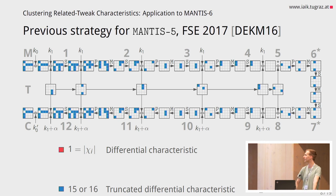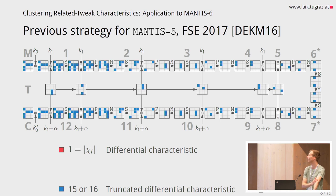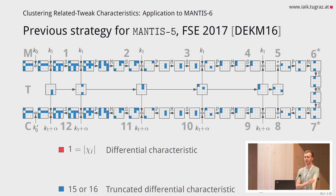If we go in the other direction and allow every possible tweak difference, we arrive at a truncated differential characteristic where we only care about whether the state cell is active or not — whether there is a difference or both cells are the same in each message. This means the S-box transition works with probability 1, but we have other constraints in the mixed column step. Overall, the probability that a given message pair with this truncated input difference follows this truncated differential characteristic is also about 2 to the minus 100, so also not great.